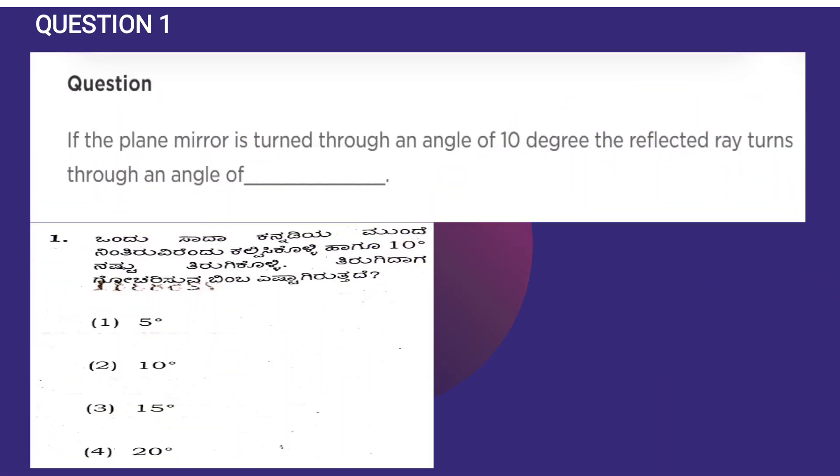The first question is: if the plane mirror is turned through an angle of 10 degrees, the reflected ray turns through an angle of what? That means if there is a mirror and you are standing in front of it, if you turn by 10 degrees, this is the first angle of incidence. Then if you turn and stand by this side, this will be the angle of incidence. That means there is a variation between the angles.